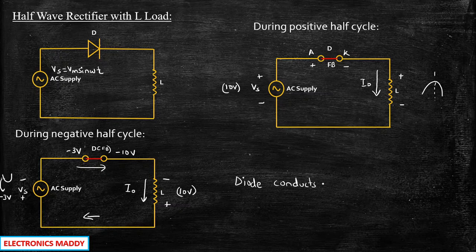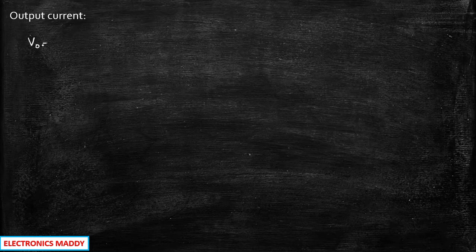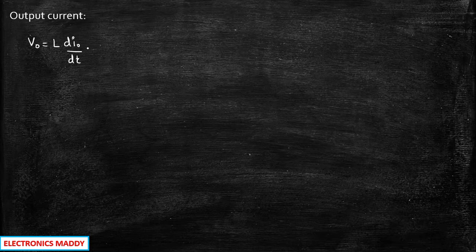Very important point: the diode conducts during both half-cycles. Now let us derive the expression for output current, which will be very helpful for us to plot the waveforms. The output voltage across the inductor can be written as V = L·(di_out/dt), and that is equal to Vm sin(ωt), that is the supply voltage. The inductor starts charging and reaches a maximum voltage equal to the voltage supplied.